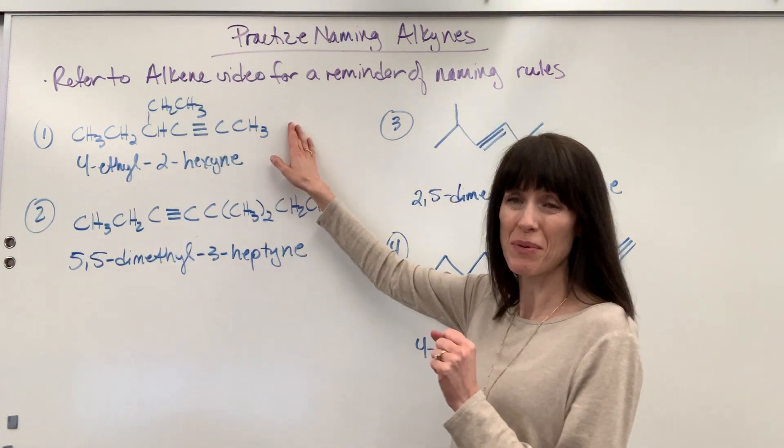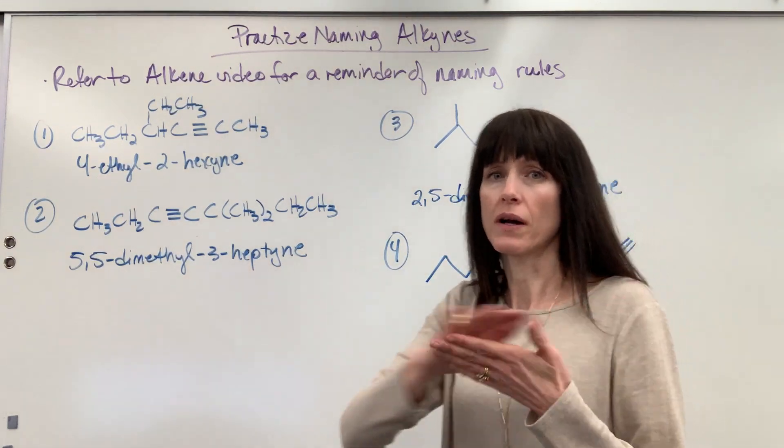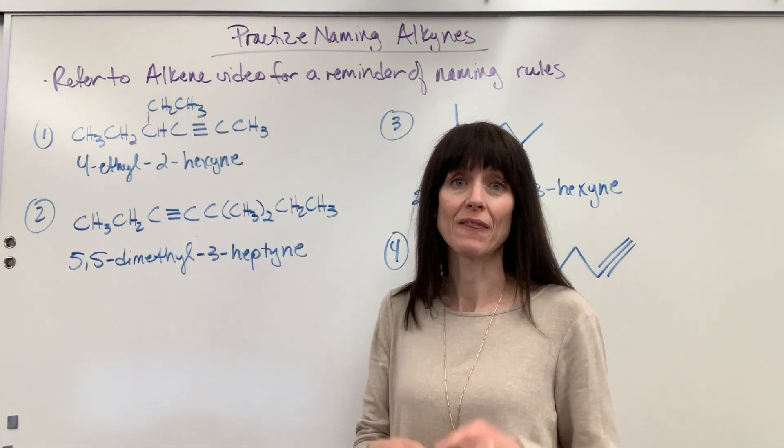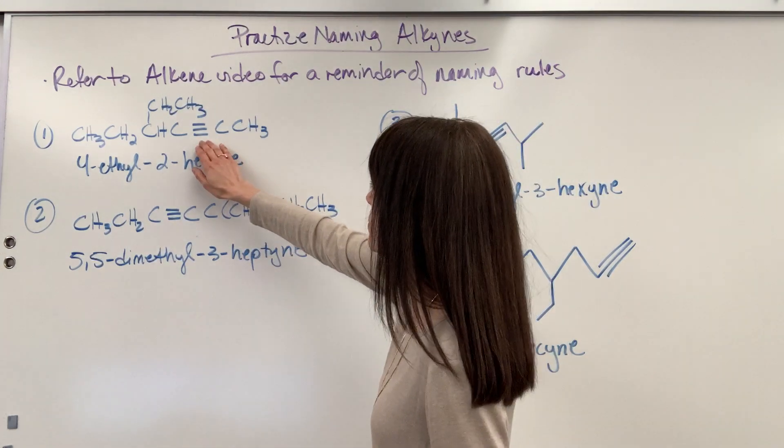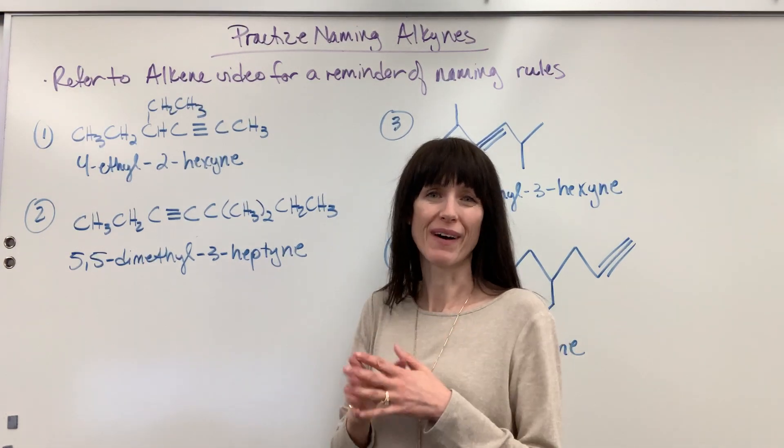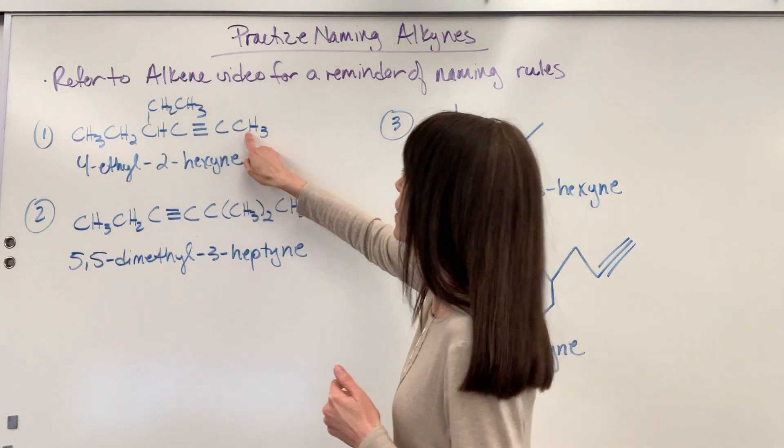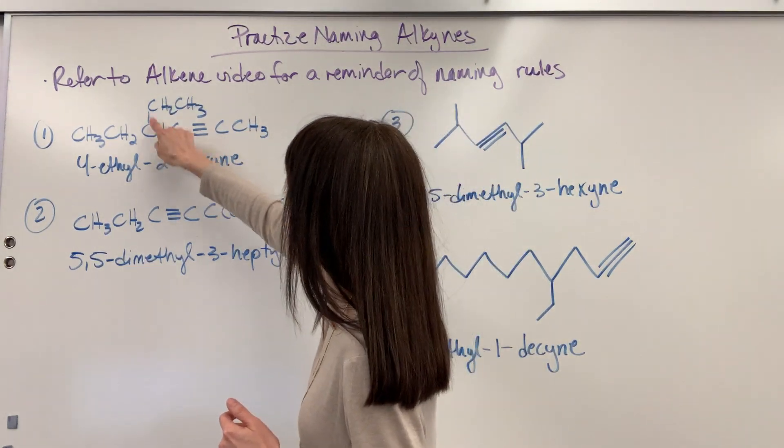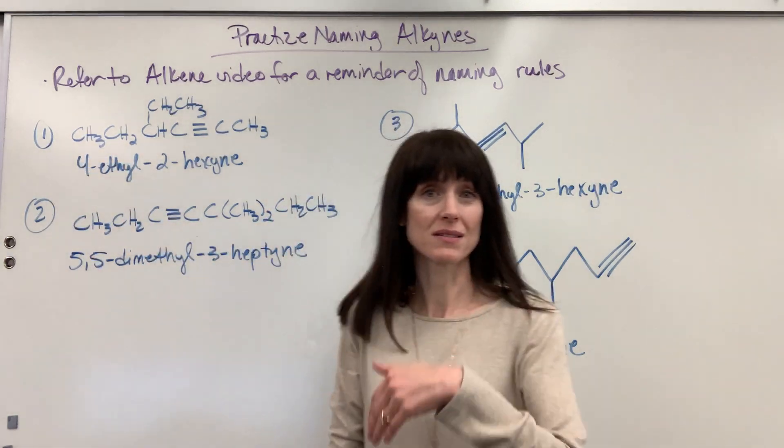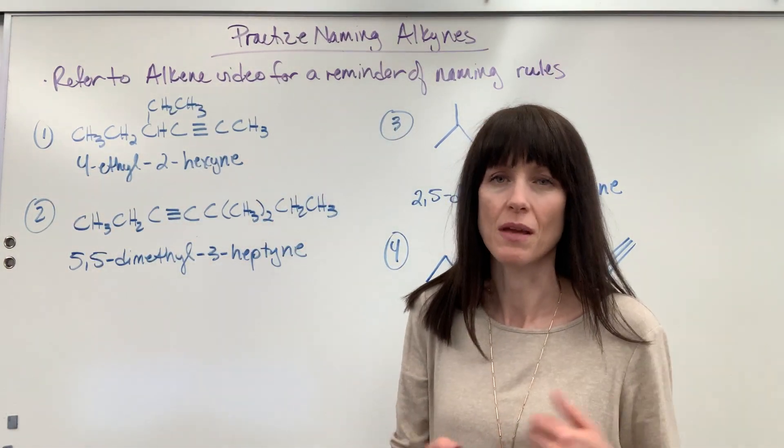Let's look at number one. Remember, we're going to count the longest string or longest chain of carbons that contain the multiple bond. So I see my triple bond right here. Also remember, we want to give that multiple bond the smallest number possible. So I want to start counting on the right hand side. One, two, three, four, five, six. One, two, three, four, five, six. Great! They're both six. We can choose either chain. We'll always end up with the same answer.